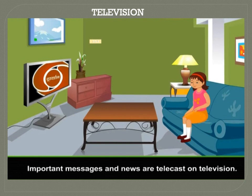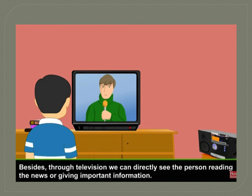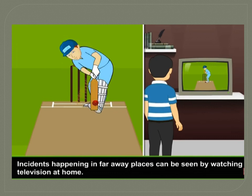Television is the next means of mass communication. Important messages and news are telecasted on television. Through television, we can directly see the person reading the news or giving important information. Incidents happening in faraway places can be seen by watching television at home.